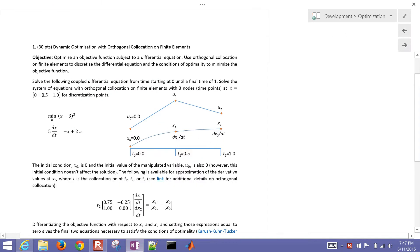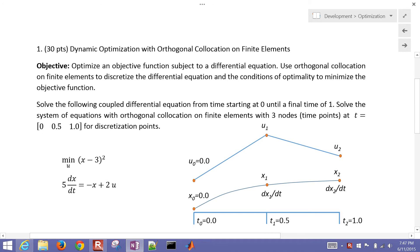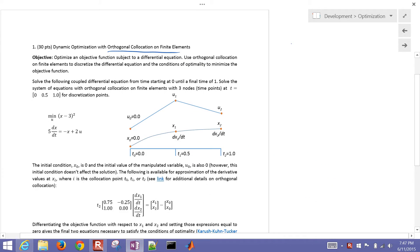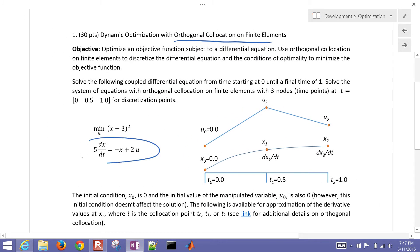Okay, so let's read through it first. This is dynamic optimization with orthogonal collocation on finite elements. Our objective in this case is to optimize an objective function subject to a single differential equation. We're going to use orthogonal collocation on finite elements to discretize the differential equation. There's our differential equation and there is our objective function that we're going to try to minimize.